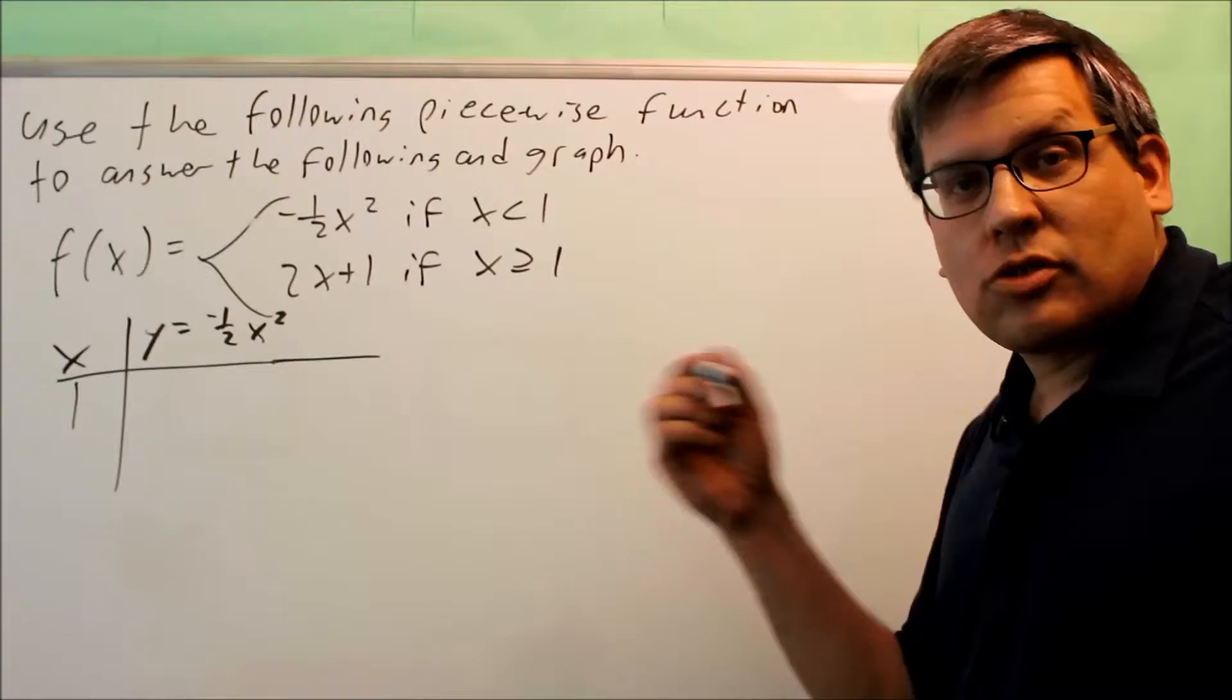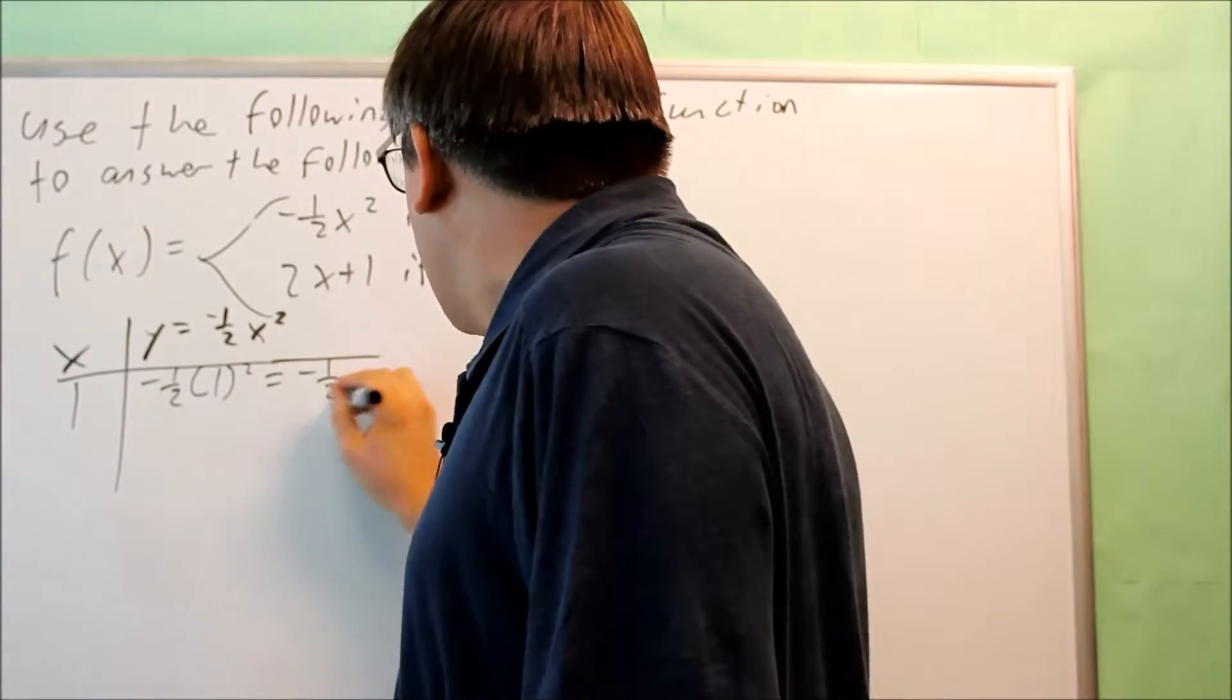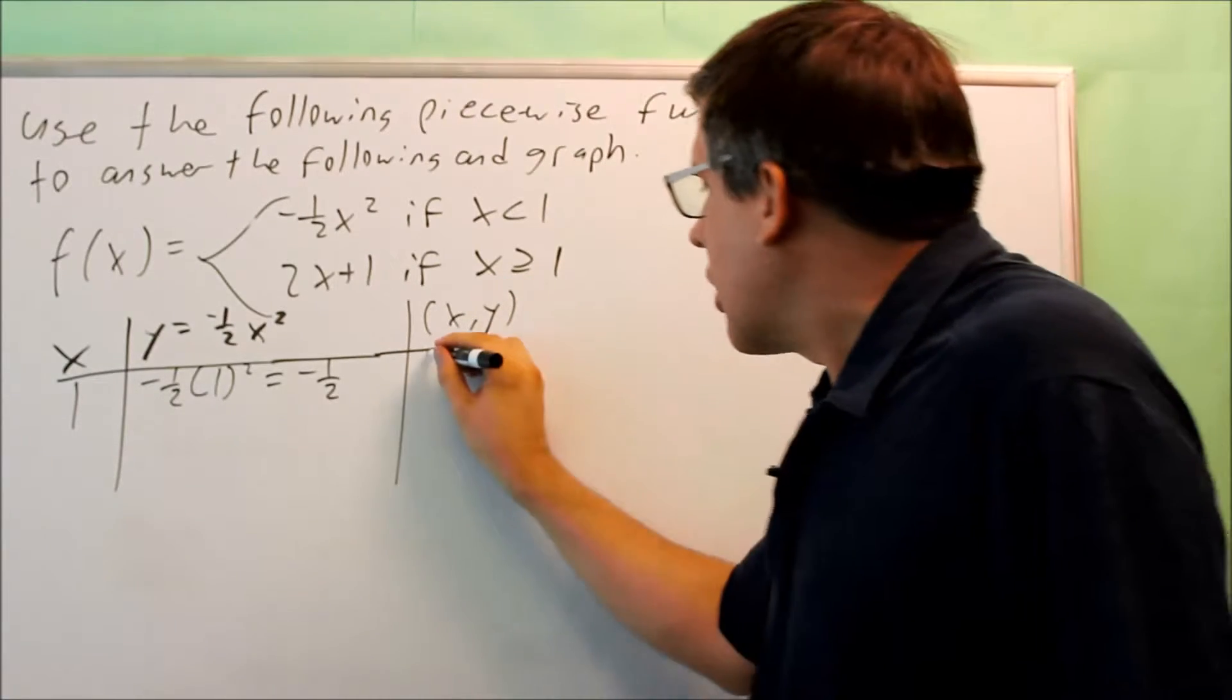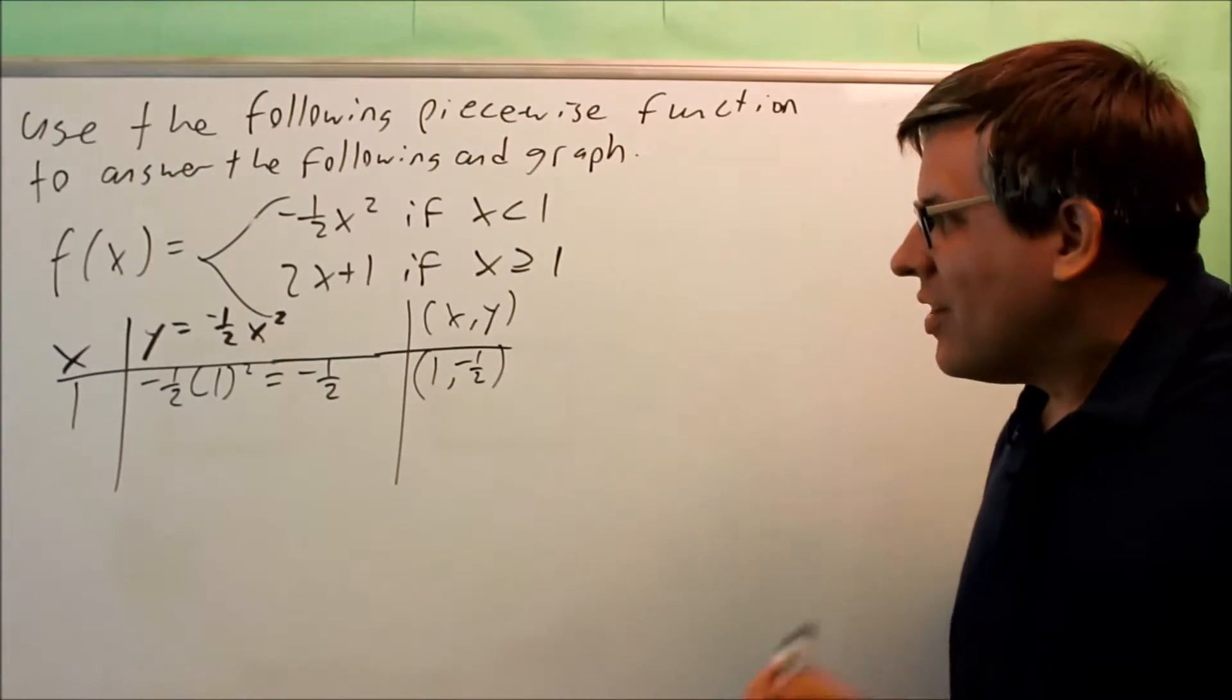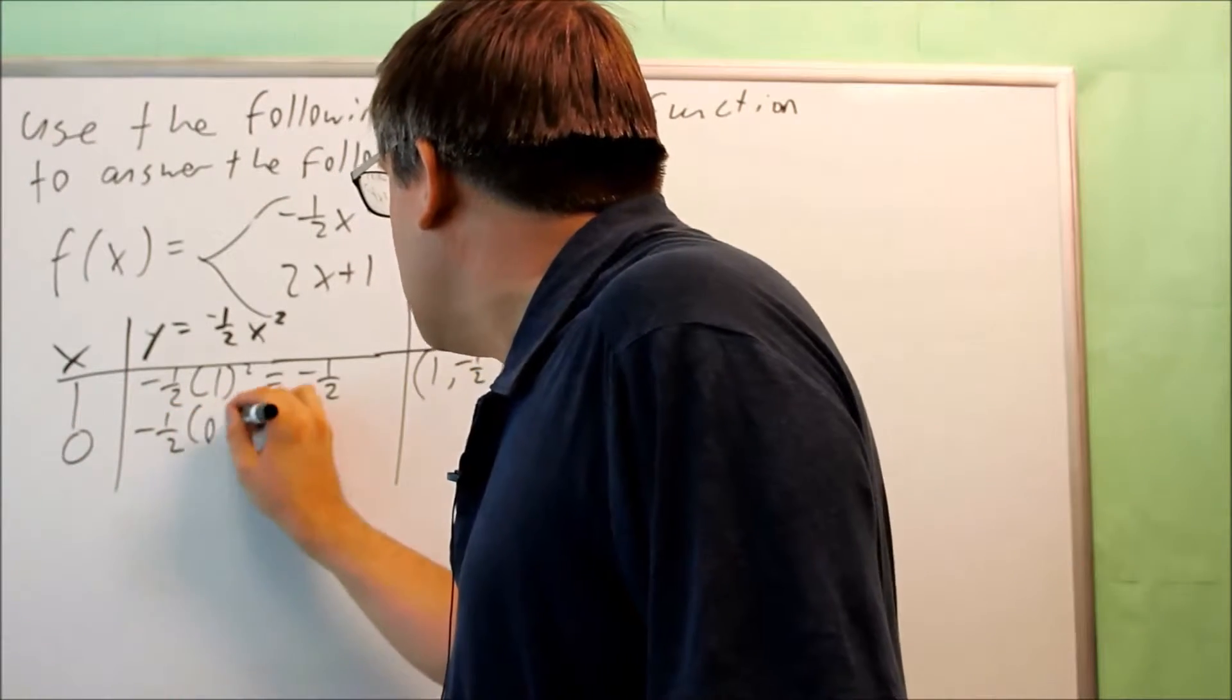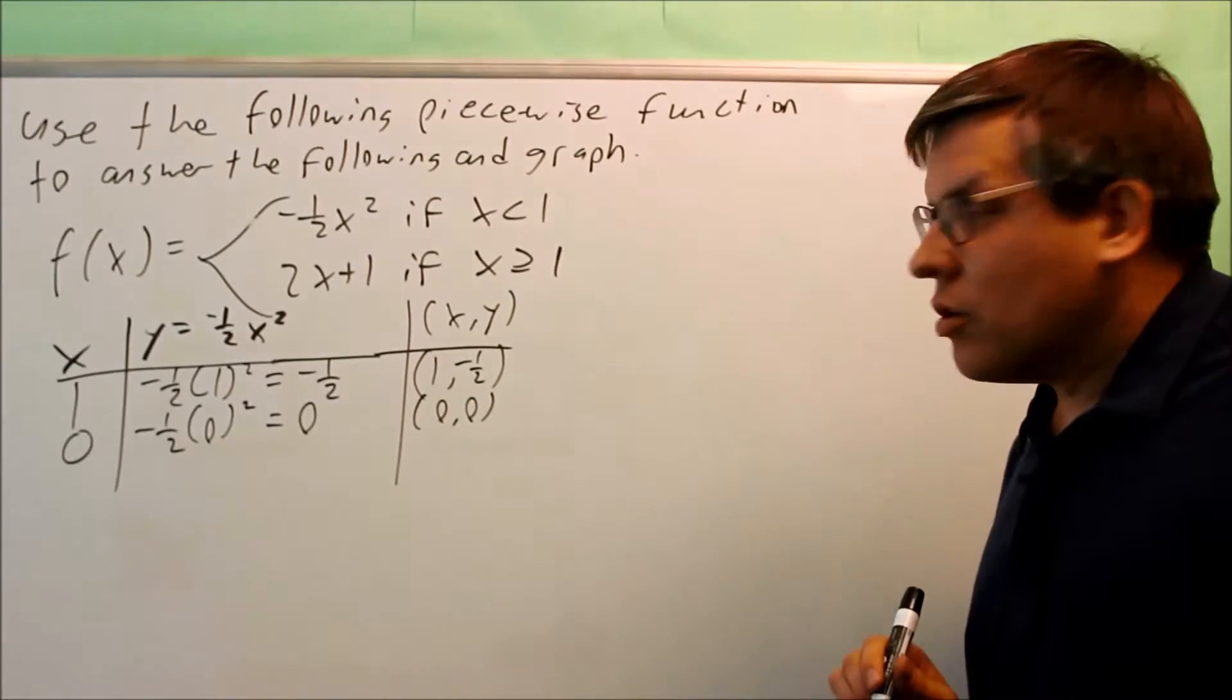Put 1 into here. Negative 1 half times 1 squared gives you negative 1 half. I end up with 1 and negative 1 half. The next point you pick should be a value less than 1. Let's use 0 because 0 is an easy one to plug in. You get 0 as a result, so you get 0, 0 as the next point that's going to be on that curve.